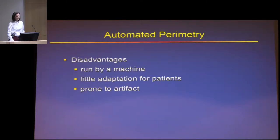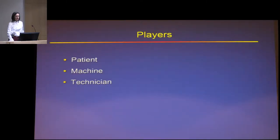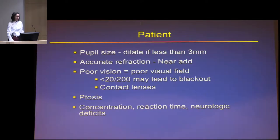The disadvantage of automated perimetry is that it's run by a machine — no chit-chatting. There is some adaptation for the patient but not very much. And it is prone to artifacts. The players in inducing artifact in automated perimetry are the patient, the machine, and the technician.